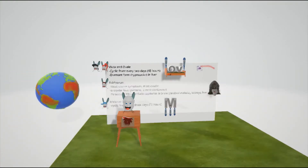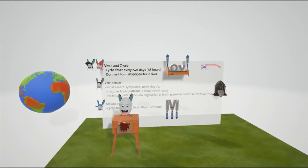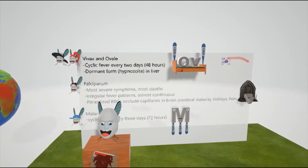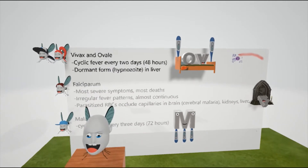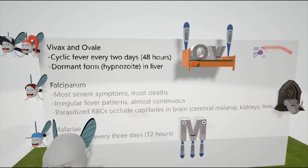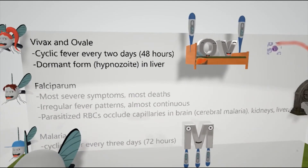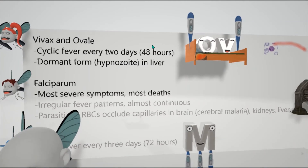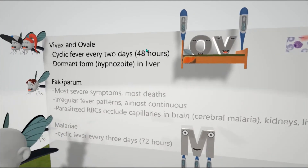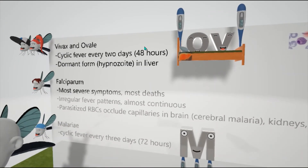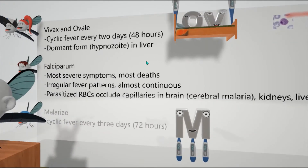We're talking about plasmodium — plasmodium causes malaria. The reason why mosquitoes were the ones talking about it is because the female Anopheles mosquito transmits the protozoa. So here we go with the different types. We have the mosquitoes that set up this slide to teach about malaria. There are many different types, but several types primarily infect humans.